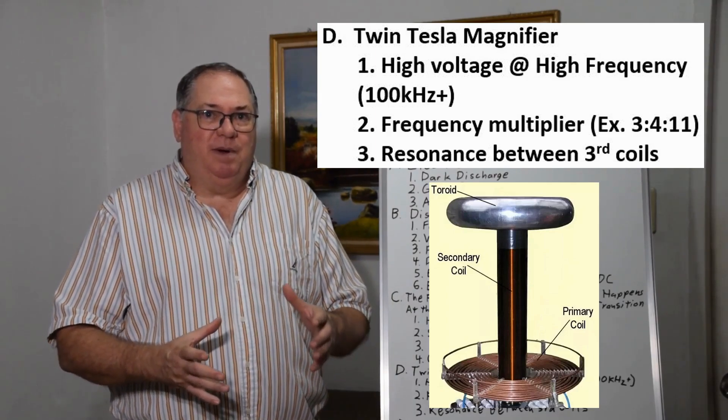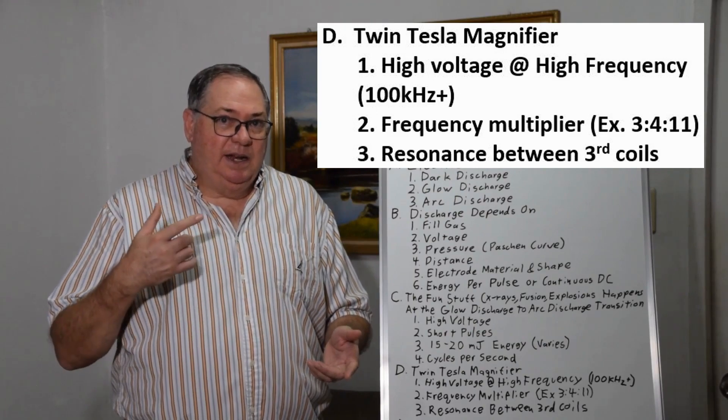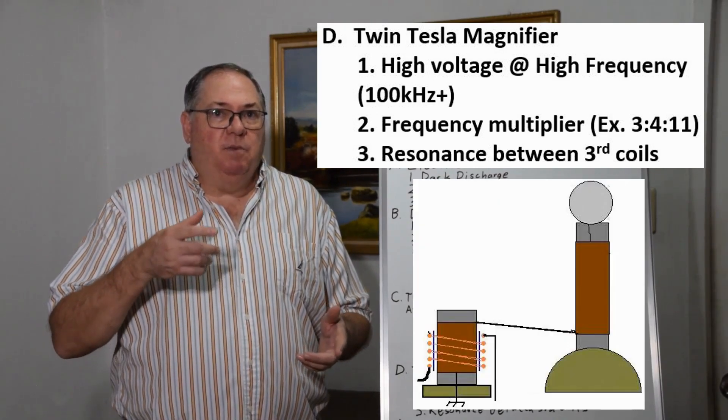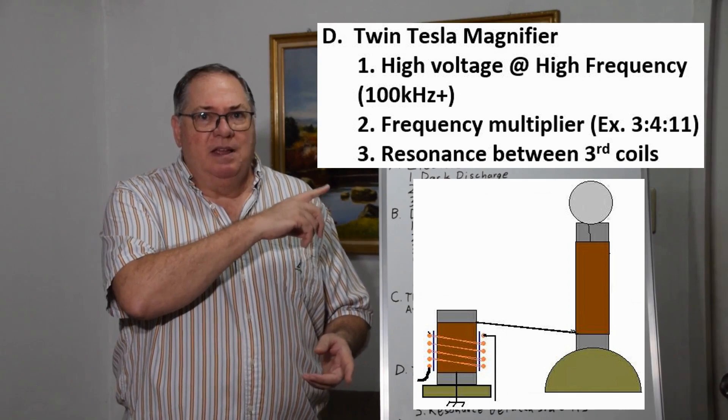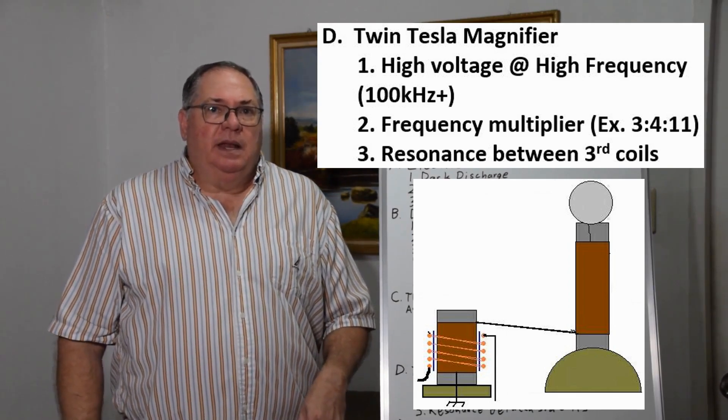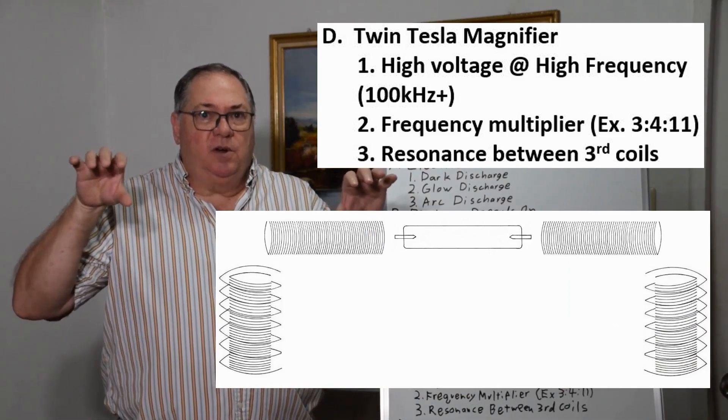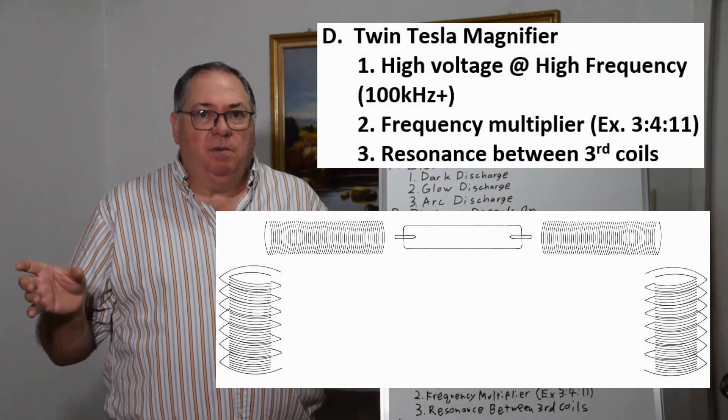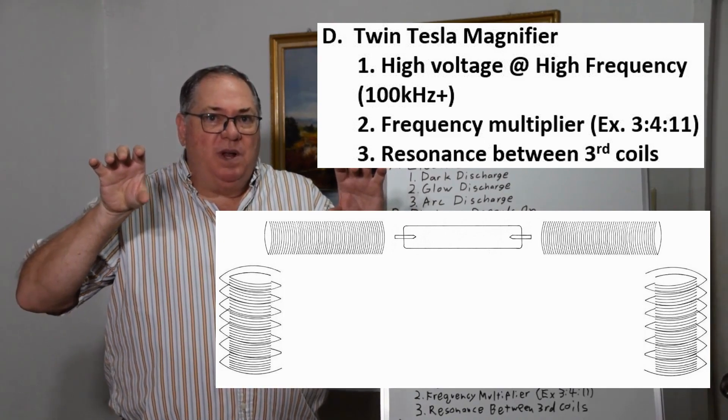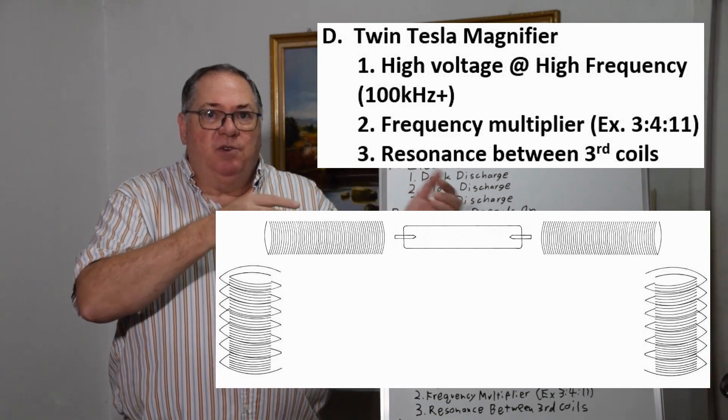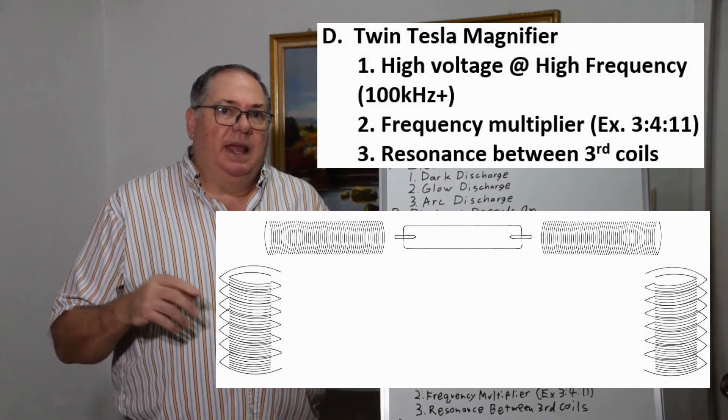Tesla realized to achieve really high voltages he needed a third coil—one not grounded and free to resonate on its own. I wanted two Tesla magnifiers where the third coils are perpendicular to the second, so when one discharged it would charge the other, which would ring back and charge the first, causing arcs in between.